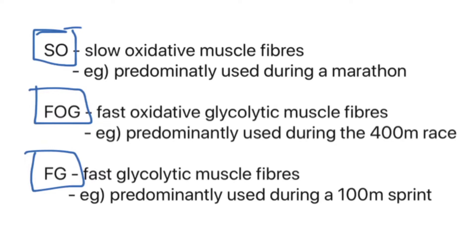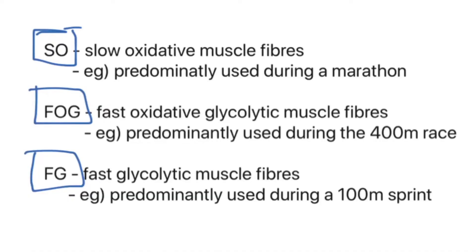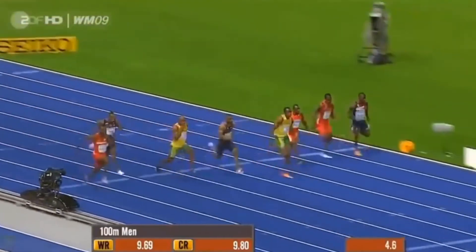FOG are fast oxidative glycolytic muscle fibres. These are intermediate in size between slow oxidative and fast glycolytic, and they respire both anaerobically and aerobically to produce an intermediate force contraction over an intermediate period of time, such as a 400m race. They are also known as the speed endurance muscle fibres. Finally, fast glycolytic muscle fibres are the largest - they produce the largest force contraction over the shortest time period, and a great sporting example is the 100m sprint.